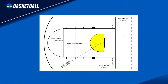Let's review the location of the restricted area and the lower defensive box. The RA is bounded by the outer edge of the four-foot restricted area arc. The lower defensive box, LDB, is an imaginary box designated by two tick marks on the end line and the second lane space marks from the free throw line, and distinguishes when the restricted area rule is or is not in effect.